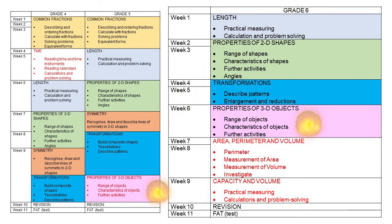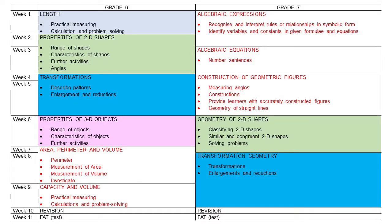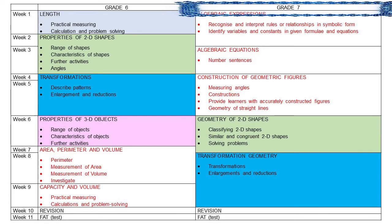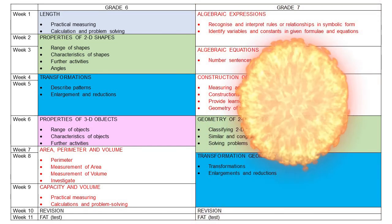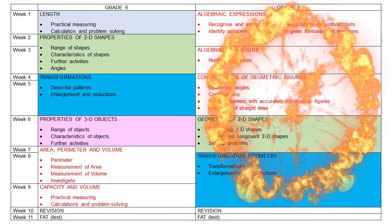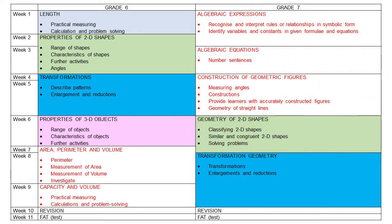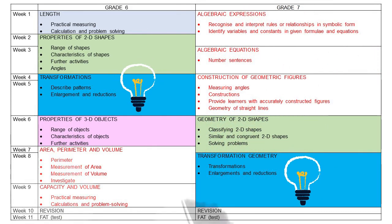Properties of 3D shapes is common for grades 5 and 6. Remember that grade 7 is the start of the senior phase of schooling, therefore the grade 7 topics are quite different from those of the intermediate phase. The only similarities are 2D shapes and transformations.